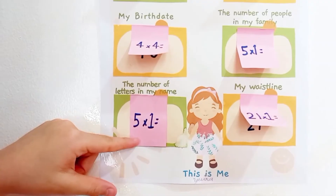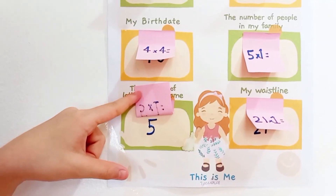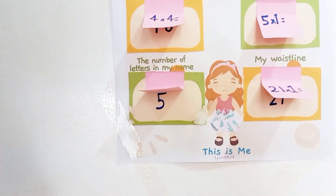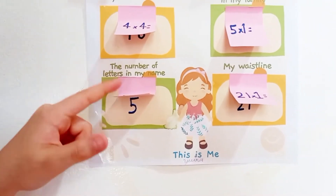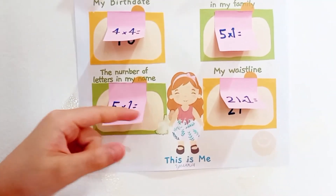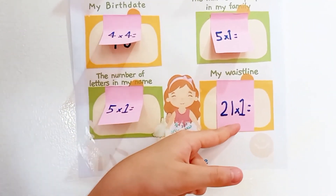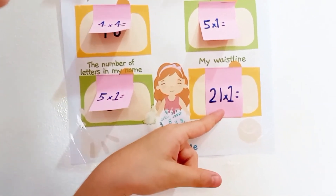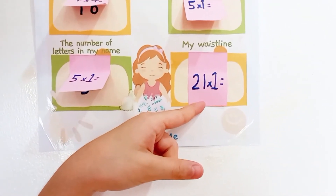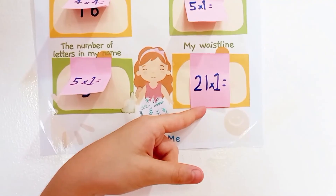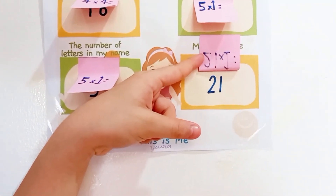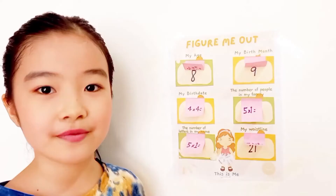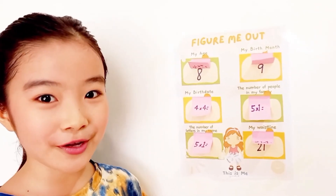Now, the number of letters in my name: five times one equals five, so my name is Yuna and it has five letters. Last one: my waistline — twenty-one times one equals 21, because my waistline is 21.